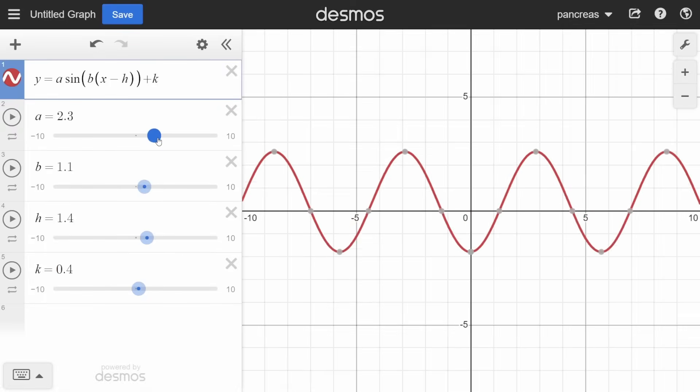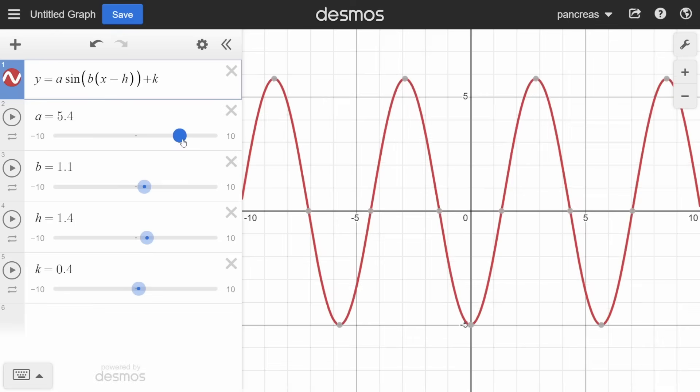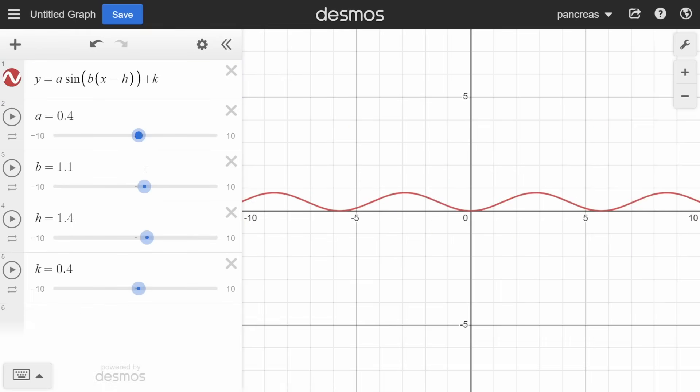Next we have the sinusoidal function. The value 'a' changes the amplitude of the wave, where the further the number is from zero the steeper the curves of the wave get. 'b' changes the frequency of the waves. As b gets further away from zero, the waves get closer together. Similarly to the quadratic function, 'h' shifts the curve left and right, and 'k' shifts the curve up and down.